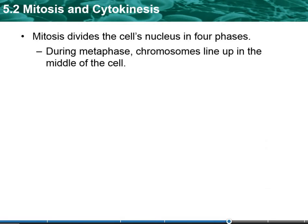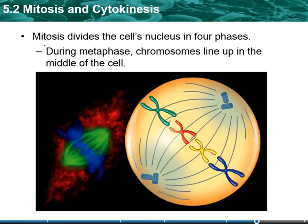During metaphase, the chromosomes line up down the middle of the cell. Prophase is going to be the longest phase of mitosis, and we'll see most of the ones in the lab are going to be in that stage. Metaphase is going to be the shortest one of mitosis, but it's going to be the easiest one for you to identify because the chromosomes line up down the middle of the cell. Again, you've got the art rendition and then you've got the actual microscopic view of it.